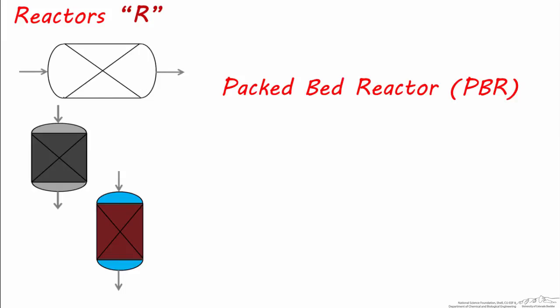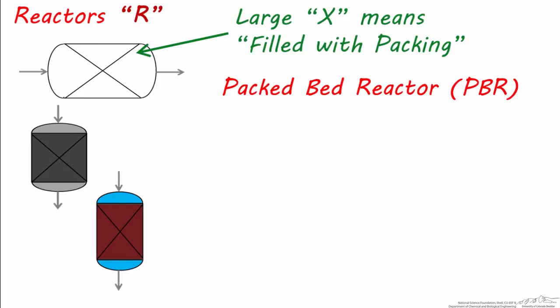Notice these symbols have large X's through them. Whenever you see a large X on a process unit, whether it's on a reactor or separator, this represents some volume filled with packing. Packing can be a catalyst or inert solids such as ceramics, metals, or glass. So this reactor is a horizontal packed bed with fluid flowing from one end to the other horizontally, and these are vertical packed columns with packing most likely dumped in from the top and supported on mesh-like trays.